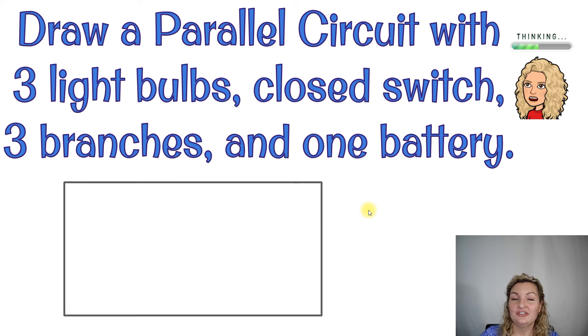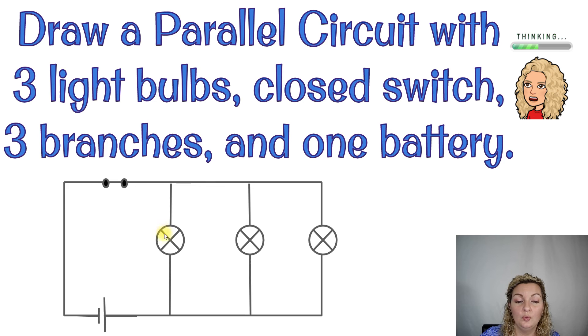All right, let's check our answers. Start with a rectangle. That's gonna be your easiest way. We know we need three branches. So go ahead and add those branches right away. You need to make sure that you are putting at least one load on each branch when you're working, right? Go ahead and add that battery in and let's go ahead and add those loads. So we have one, two, and three light bulbs. One light bulb, remember, on each branch, okay? And then we added in that closed switch that it requested and we are good to go.